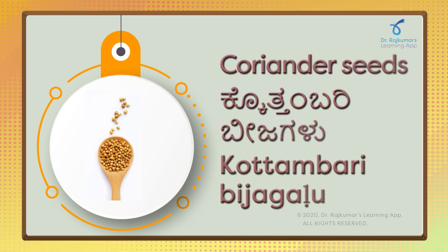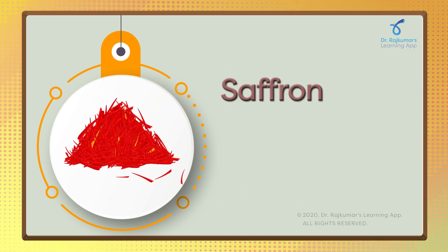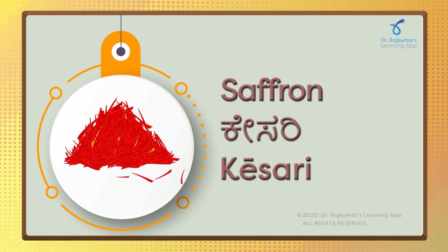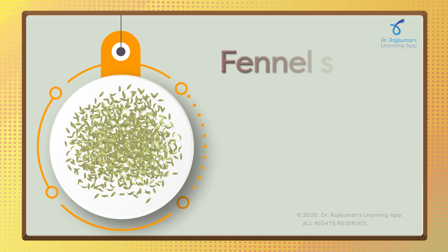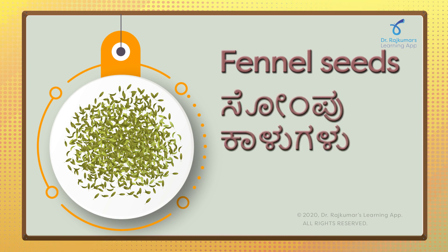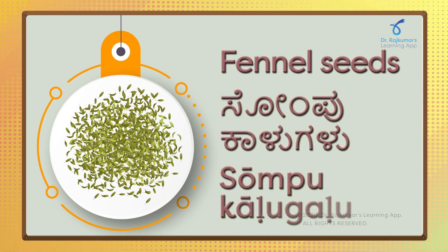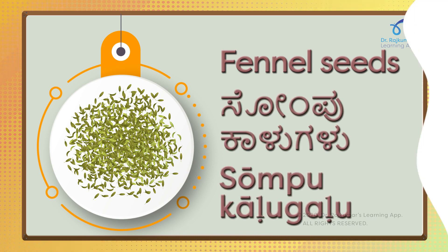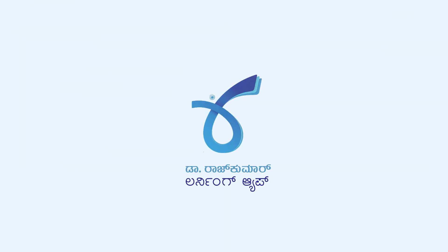Coriander seeds — Kothambari beejjagalu. Saffron — Kesari. Fennel seeds — Sompu Kalugalu.